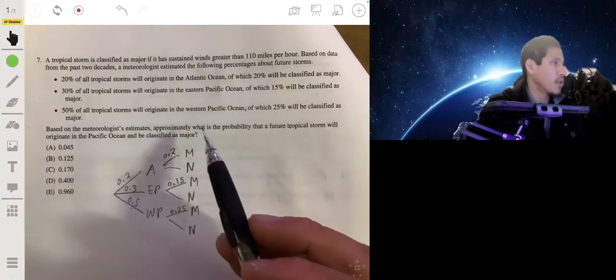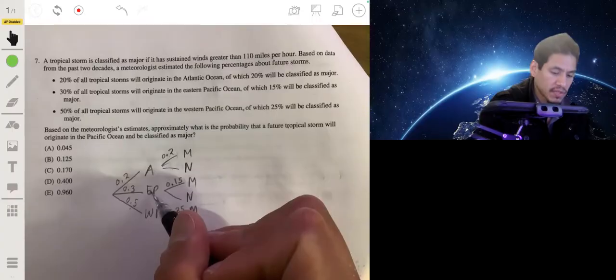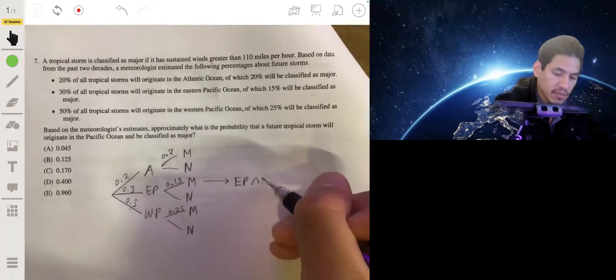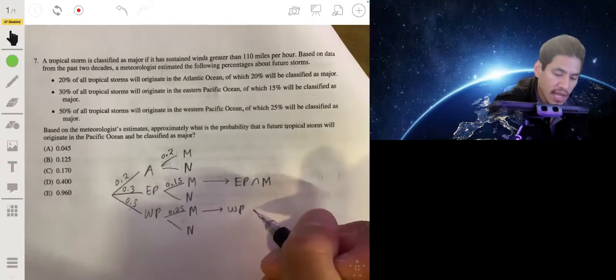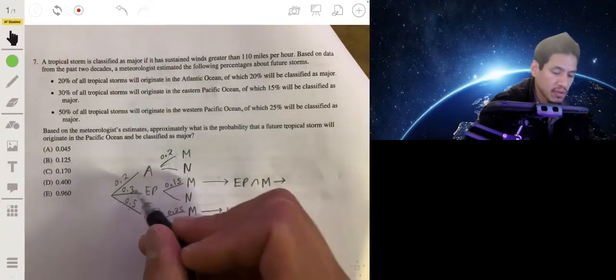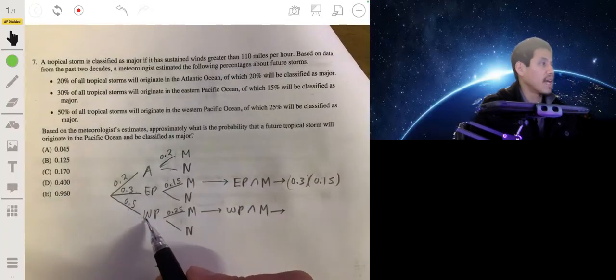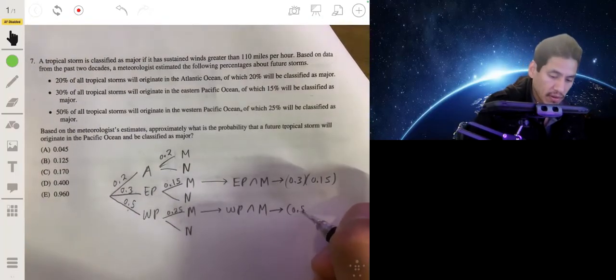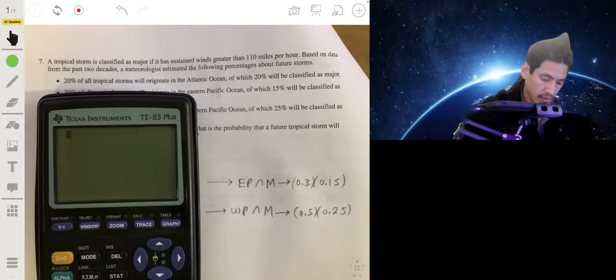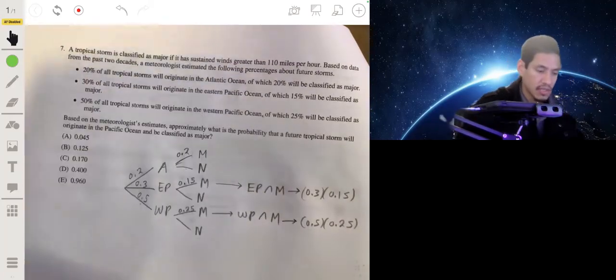We're trying to find what the probability is that it'll come from the Pacific and be classified as major. So it can either be eastern Pacific and major or western Pacific and major. The probability of coming from the eastern Pacific Ocean and being major is just multiply those corresponding values: 0.3 times 0.15. And likewise, to find the probability that it's from the western Pacific Ocean and major, you're going to do 0.5 times 0.25. So you multiply both of these and you add their values together: 0.17. So your answer will be C.